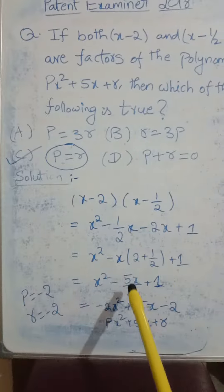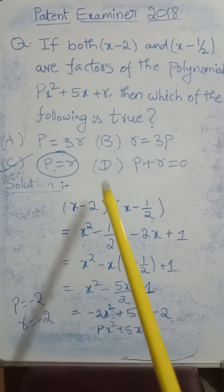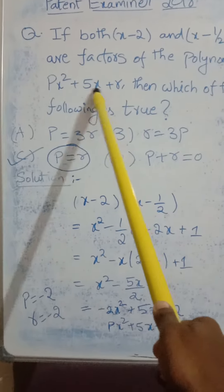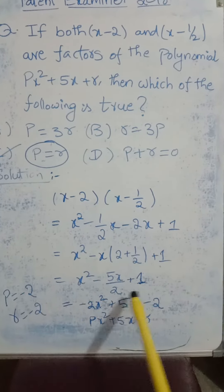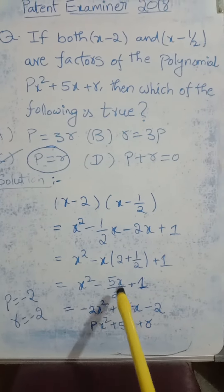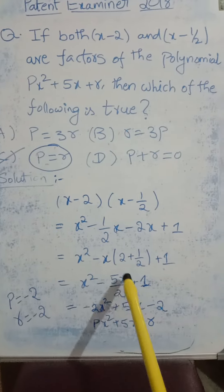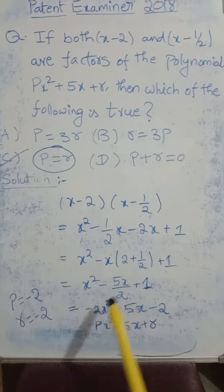If I compare these two equations, I am having the coefficient of x as 5. So I am multiplying this quadratic equation with minus 2 so that I will get the coefficient of x as 5.